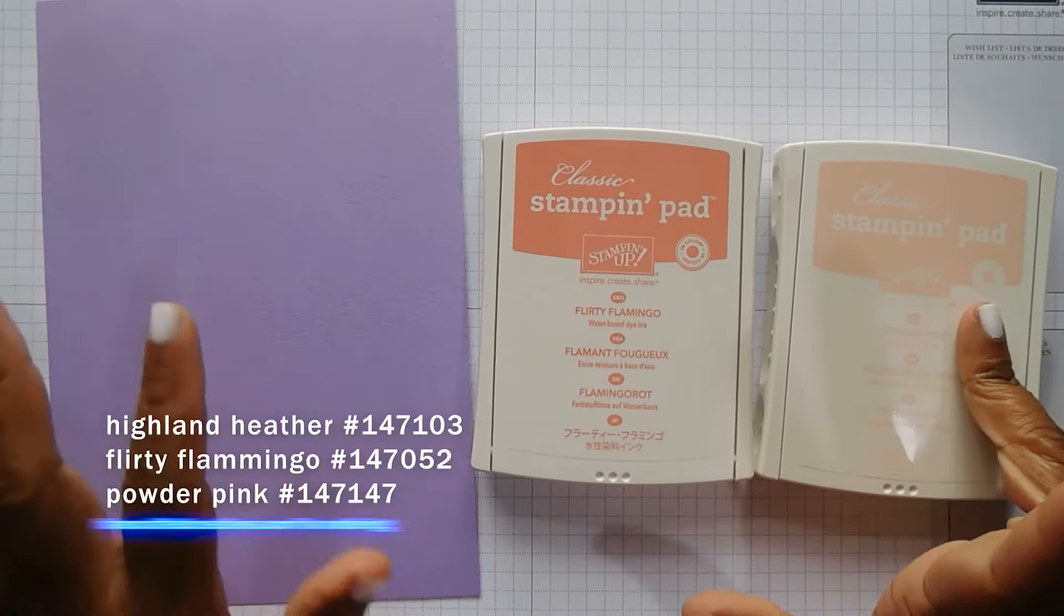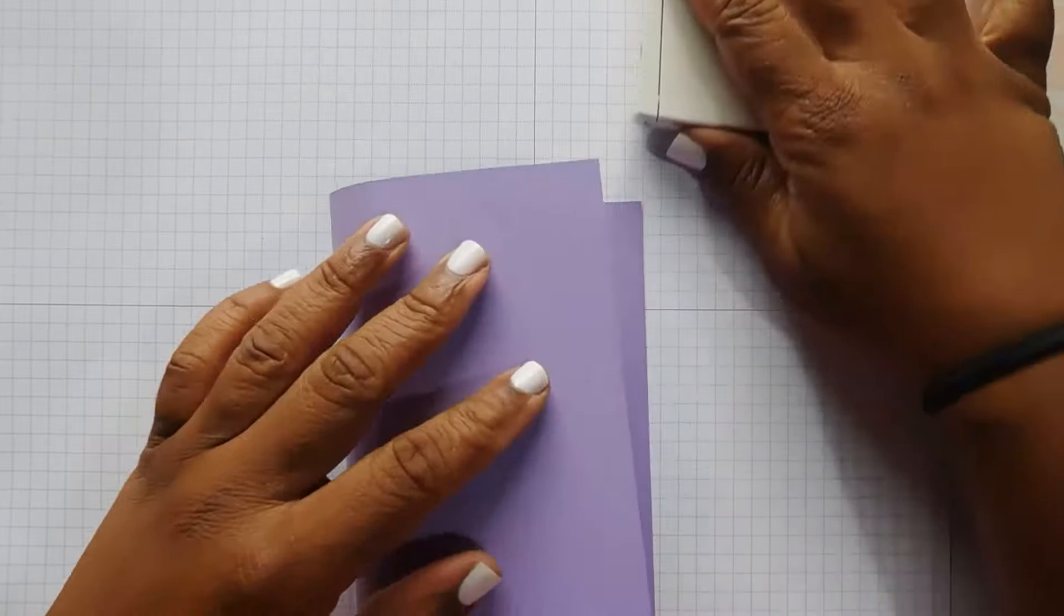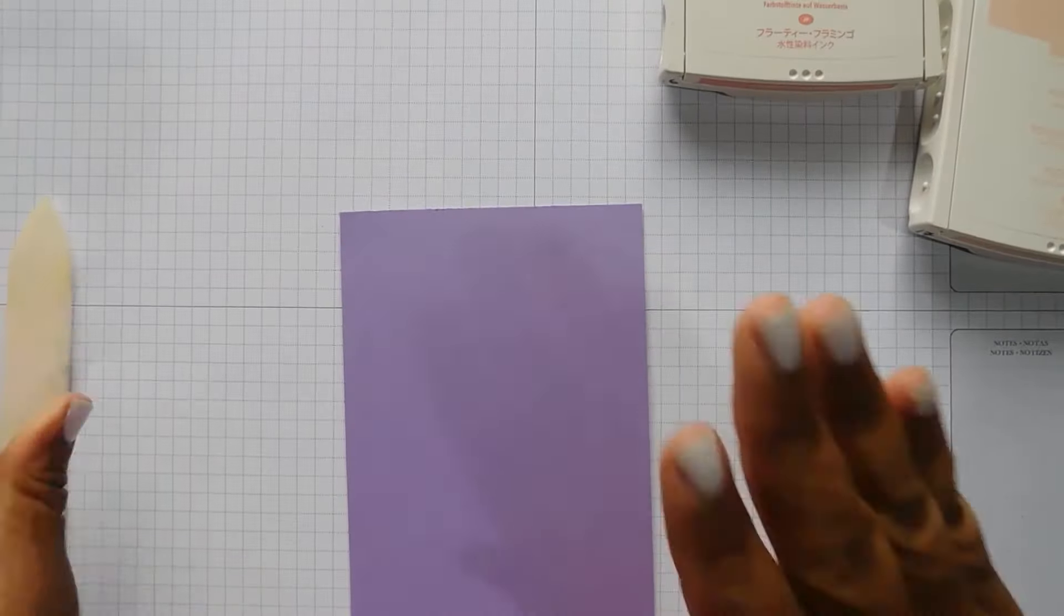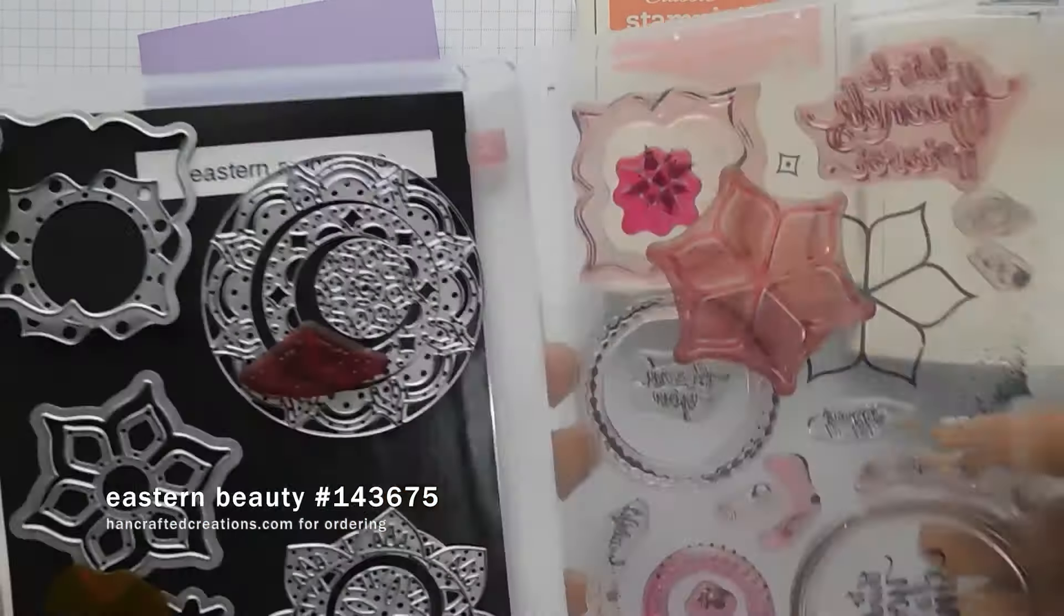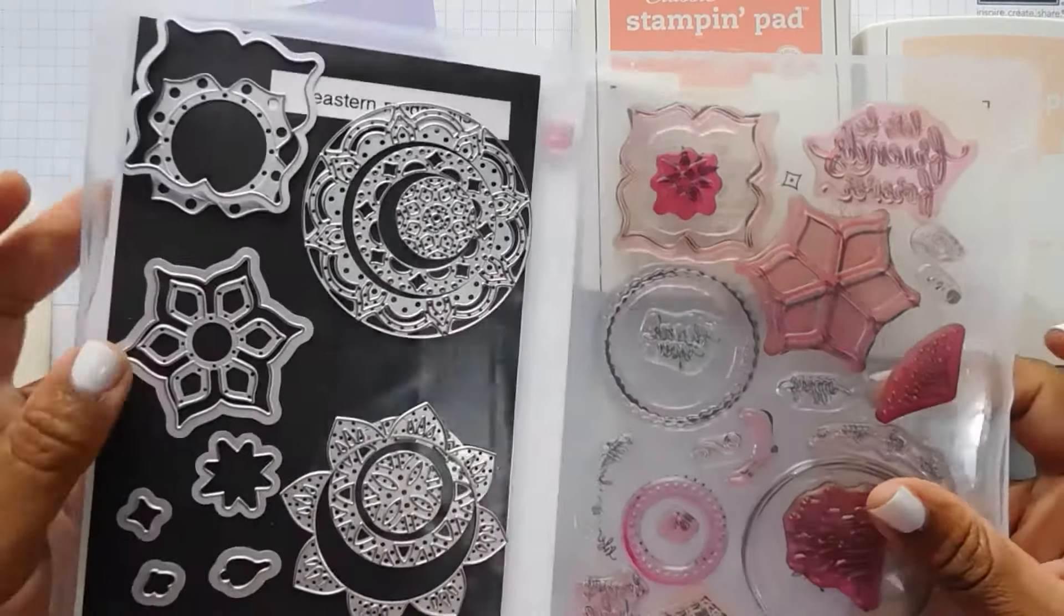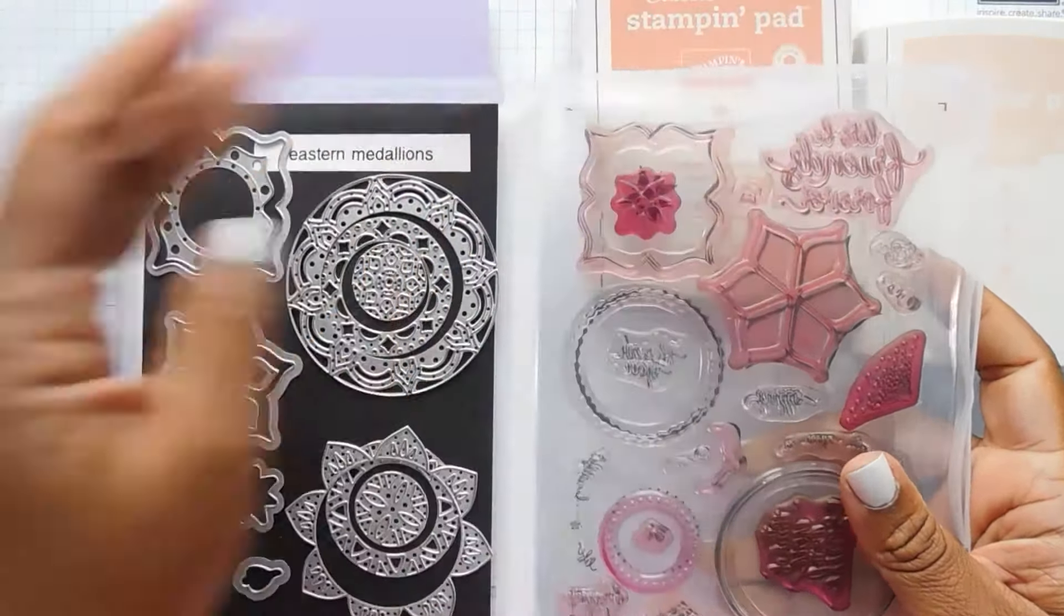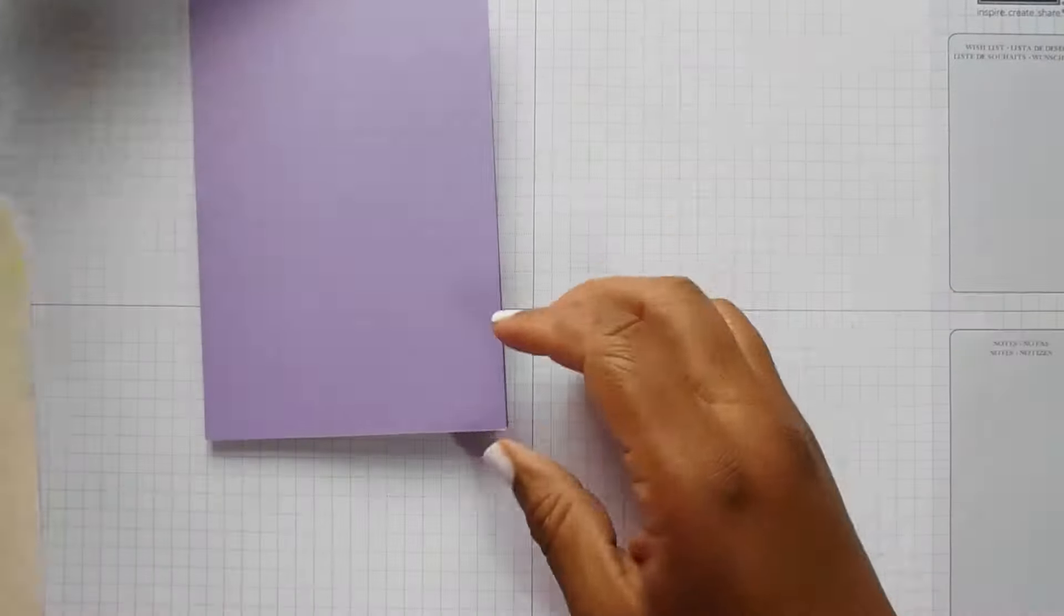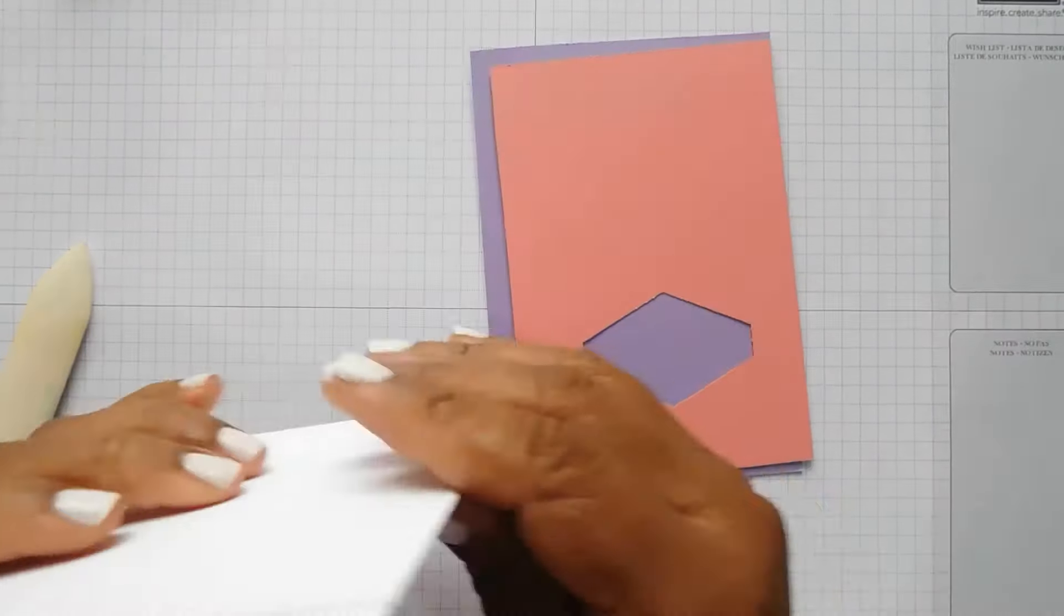Okie dokie. So we've got Powder Pink, Flirty Flamingo and Highland Heather card stock and this is going to be our card base. So the stamp set that we're using this week is the Eastern Beauty stamp set and the coordinating dies. So I've got all of mine in here all together.